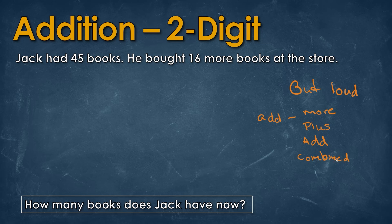Let's take a look and read this question to see what they're trying to do. Jack had 45 books — so it sounds like he started out with 45 books. And it says he bought 16 more. Remember, we see that word 'more' here. That means we are going to add. So he bought 16 more books at the store. How many books does Jack now have?